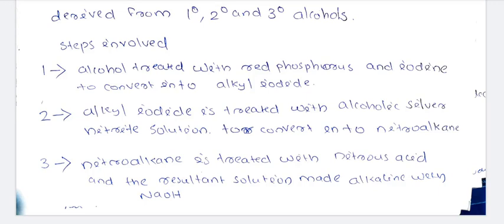The steps involved are: first, we take primary, secondary, and tertiary alcohol. Alcohol is treated with red phosphorus and iodine to form alkyl iodide. The alkyl iodide is then treated with alcoholic silver nitrate (AgNO₃) to form nitroalkane. We then treat nitroalkane with nitrous acid (HNO₂) based on reactivity.